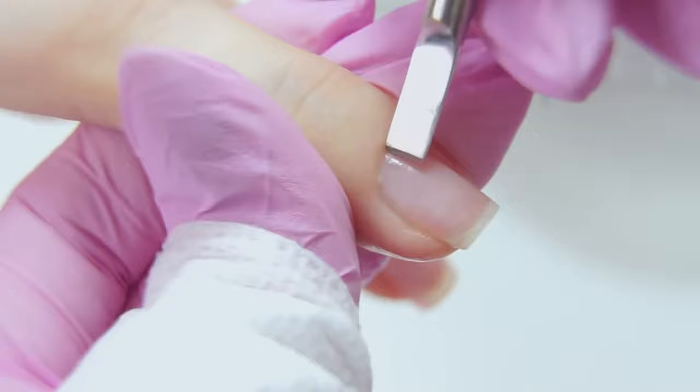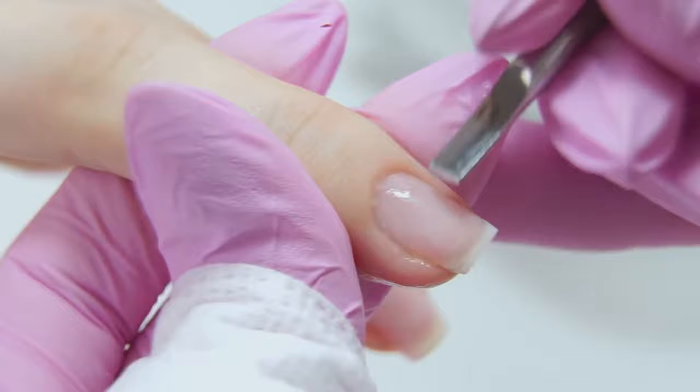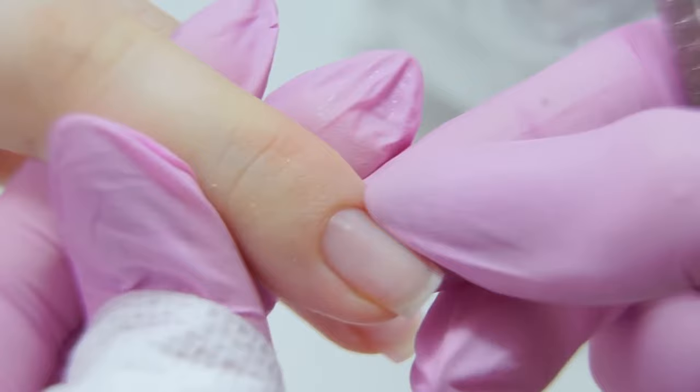The tip of the pusher should be about half to one millimeter below the cuticle. Remove all the dry and dead skin and open up the area under the cuticle. I'm making upward move with a tissue to lift up the cuticle. Now we can see a thin strip of it.